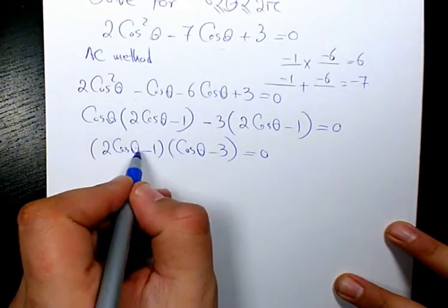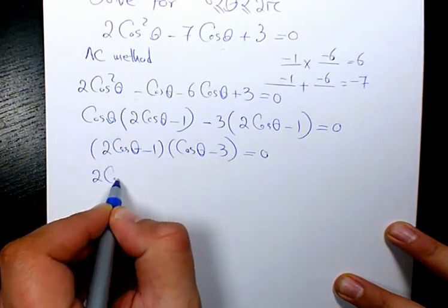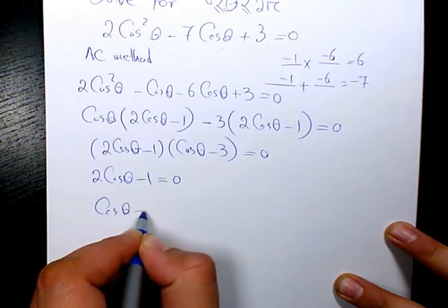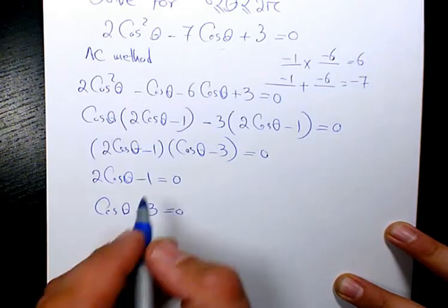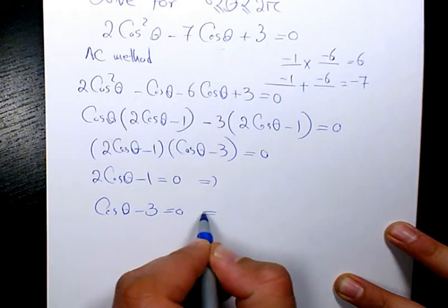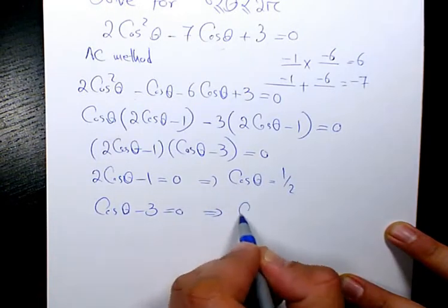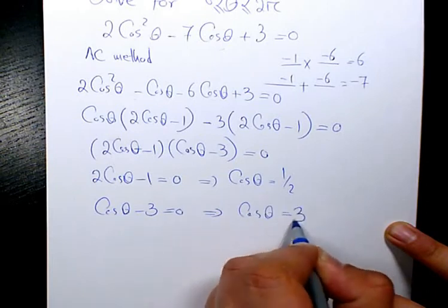So then I solve it for each of them. It's going to be 2 cosine theta minus 1 equals to 0, and cosine theta minus 3 equals to 0. If you solve for cosine, we have cosine theta equals to 1 over 2, and cosine theta equals to 3.